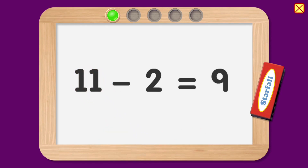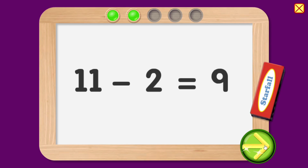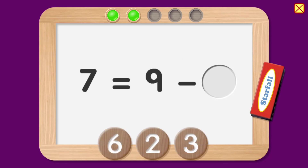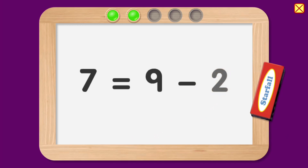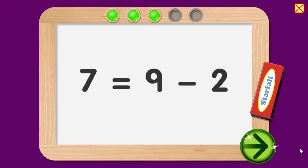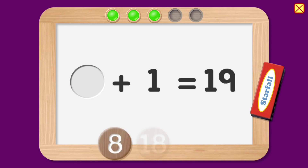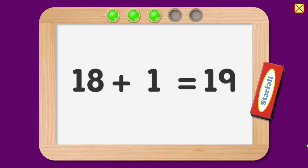Nice. 11 minus 2 equals 9. Fabulous. 7 equals 9 minus 2. Fabulous. 18 plus 1 equals 19.